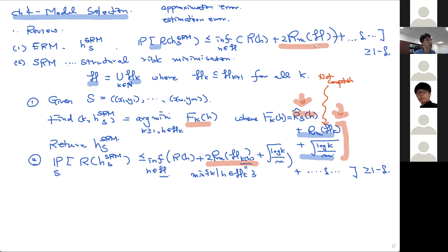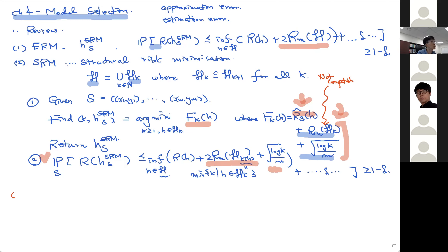There is an extra penalty term in the SRM bound, but it's not going to be very large because K is incorporated as log K. So what we're going to do today is show this bound, and if time permits, we will also look at something called cross-validation. That's our plan.